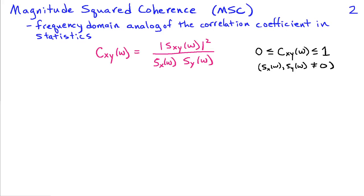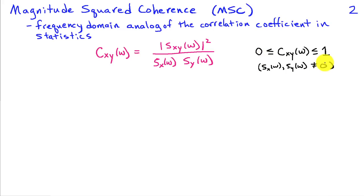The magnitude squared coherence is a frequency domain analog of the correlation coefficient used in statistics, and it's derived in terms of the cross spectrum and the power spectral density for the two signals. We define the magnitude squared coherence c x y of omega as the magnitude squared of the cross spectrum normalized by the power spectra of x and of y. Just like the correlation coefficient — defined in terms of the correlation between two random variables normalized by their standard deviations — the magnitude squared coherence is confined to be between zero and one. If we didn't have the magnitude squared part, it could go from minus one to one, but the magnitude squared restricts it to between zero and one. This is only defined when the power spectra of the process are non-zero at frequencies of interest.